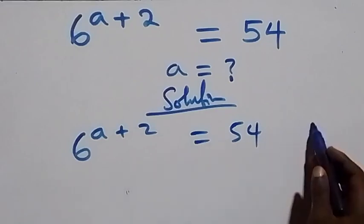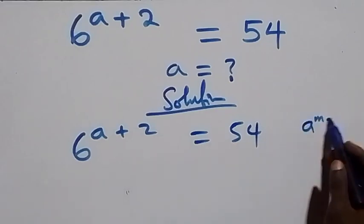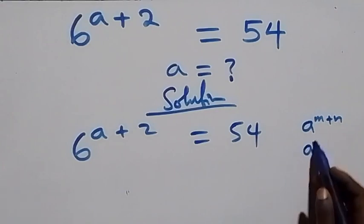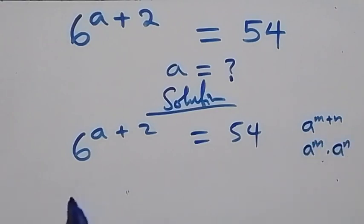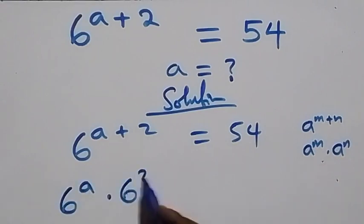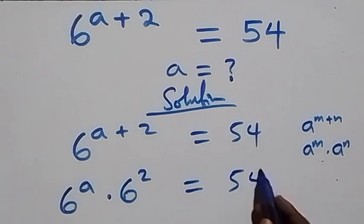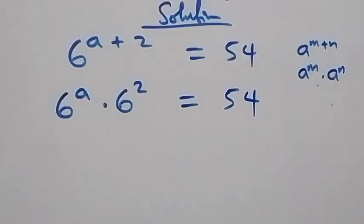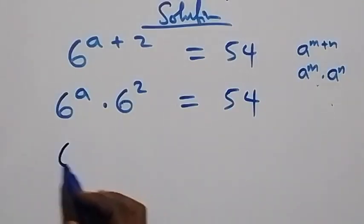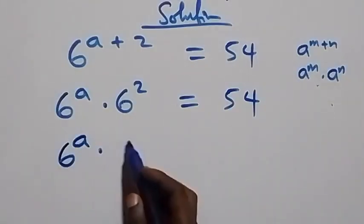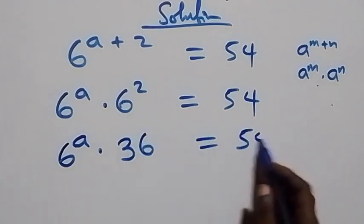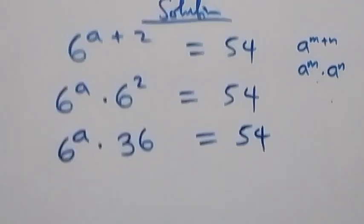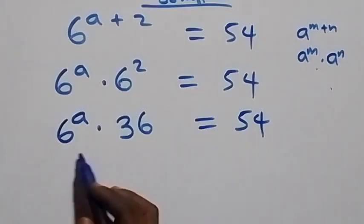This follows when we have a raised to power n plus n, which we can rewrite as a raised to power n times a raised to power n. So here we have 6 raised to power a times 6 squared, which equals 54 on this side.